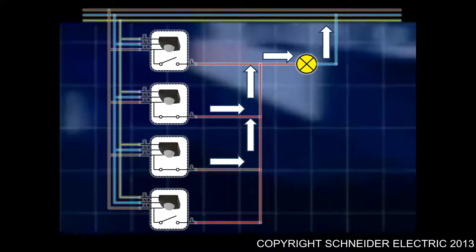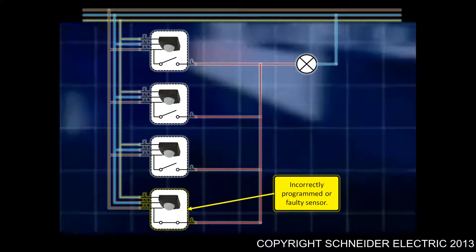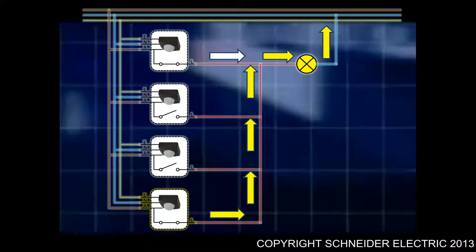If by chance we have incorrectly programmed one of the sensors or one of the sensors has gone faulty, what you could potentially see is that light being kept on indefinitely.